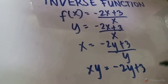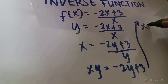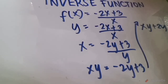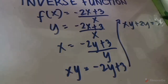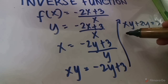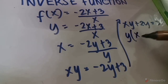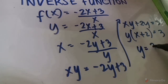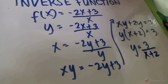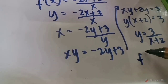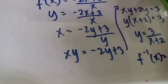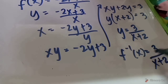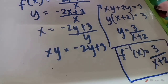Continuing: transpose to get xy + 2y = 3. Factor out y: y(x + 2) = 3. Divide: y = 3 / (x + 2). Replace y with inverse function notation — f⁻¹(x) = 3 / (x + 2). This is the final answer.